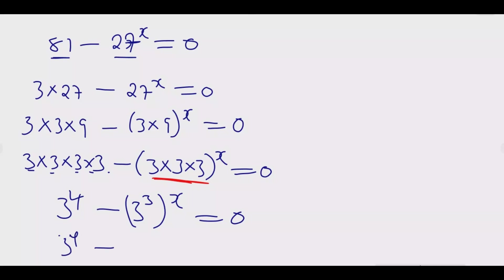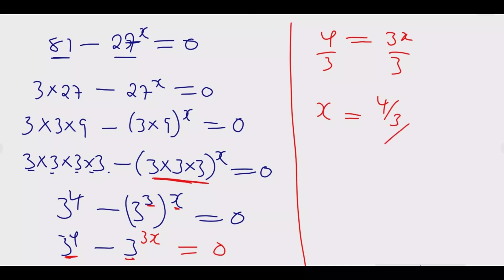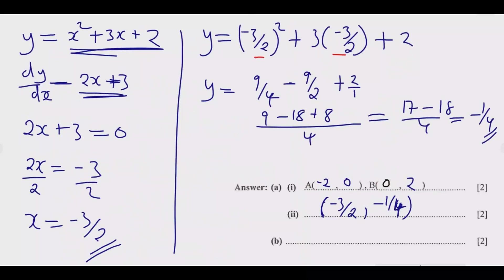Since the bases are the same, the powers must be equal: 3x = 4. Dividing both sides by 3 gives x = 4/3, which can also be written as 1⅓. That earns the final two marks for this question.